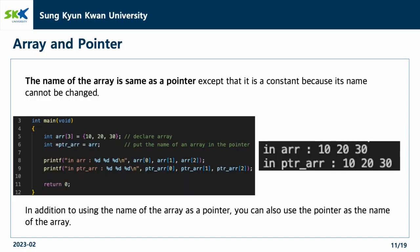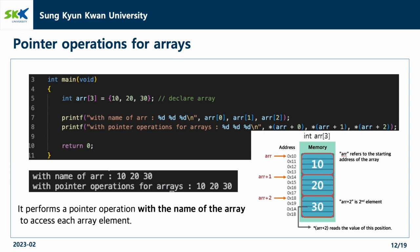The next part is array and pointer. The name of the array is the same as a pointer, except that it is a constant because its name cannot be changed. In addition to using the name of the array as a pointer, you can also use the pointer as the name of the array. As you can see in the code, we can use the array variable like a pointer type variable. For example, if we want to get the second value of the array ARR, we can use both the expression ARR[1] and *(ARR+1). It performs a pointer operation with the name of the array to access each array element, so they give the same result.